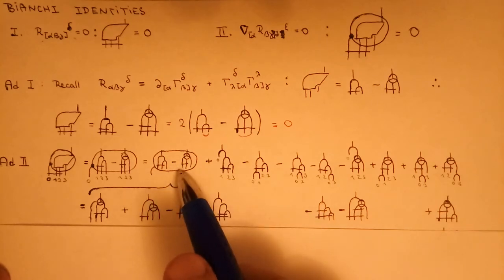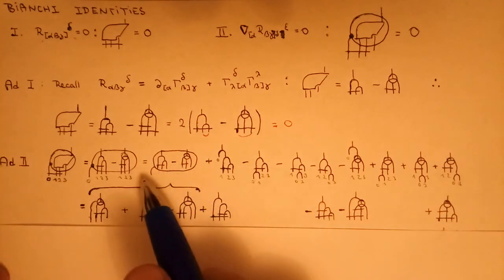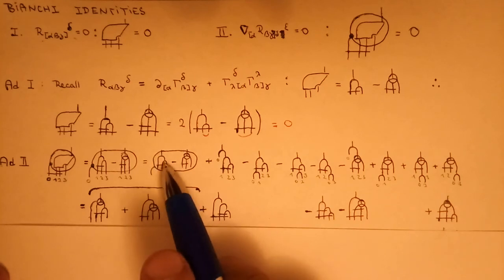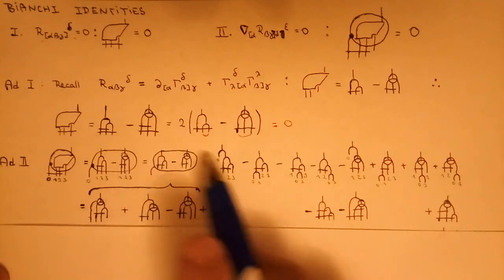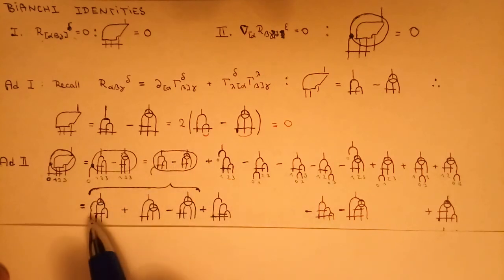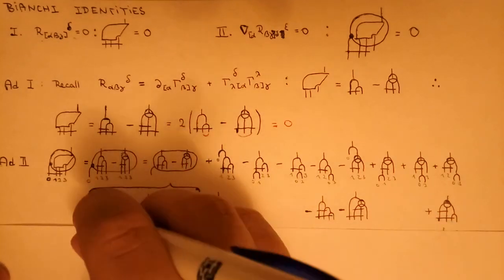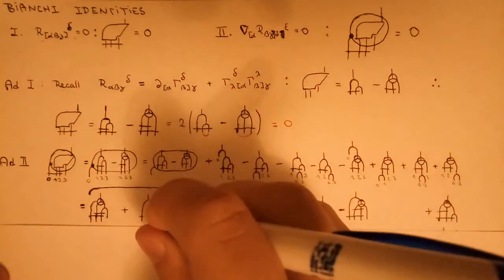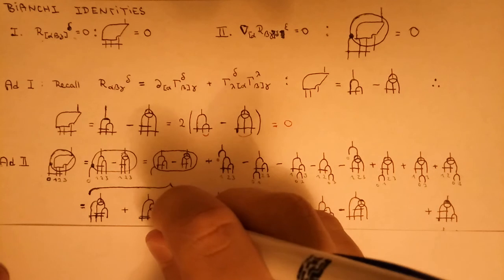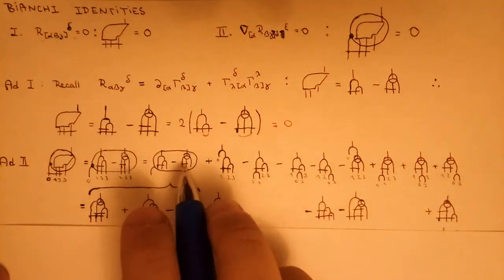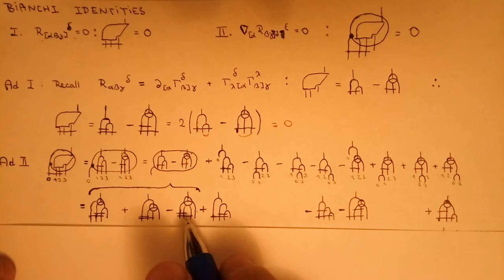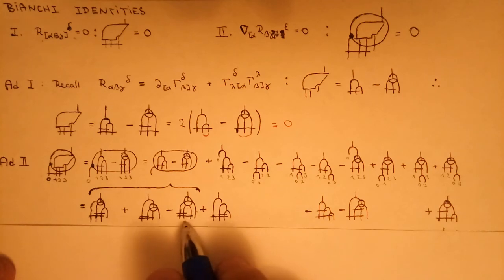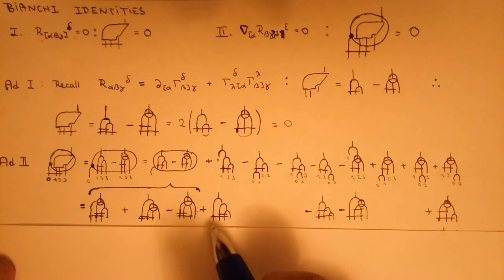So we are only left with the partial derivative terms, and the partial derivative means that you have to differentiate this Christoffel symbol and this Christoffel symbol. There should be a bar over the derivative of the first symbol and also a bar over the second symbol. The derivative of this particular tensor is zero because these partial derivatives commute.